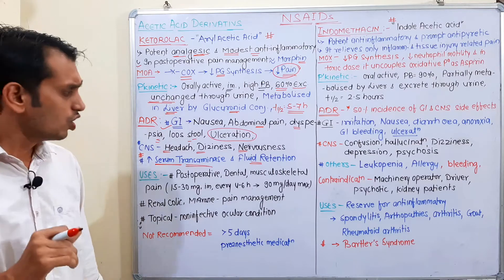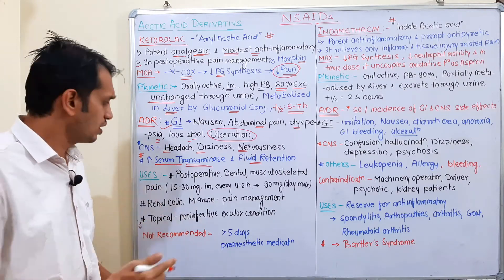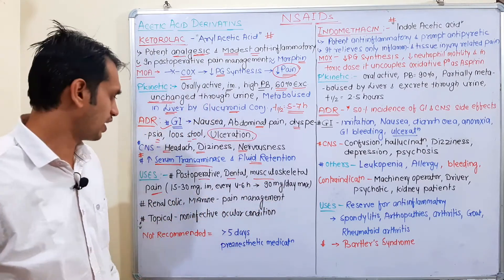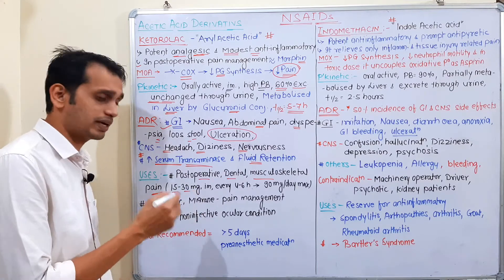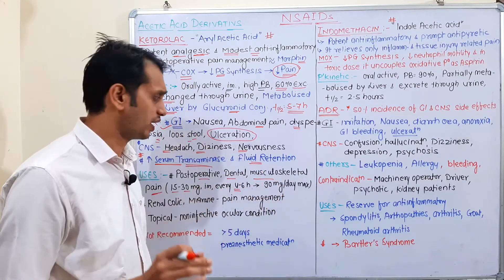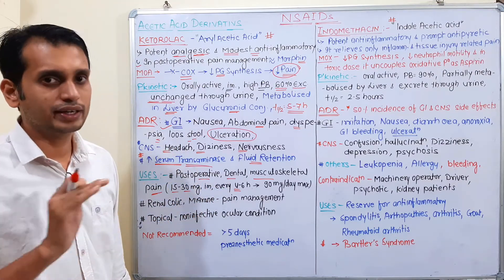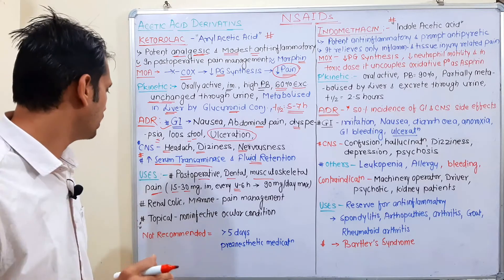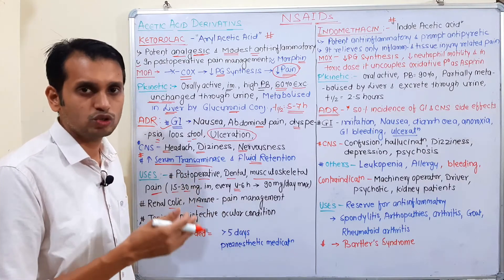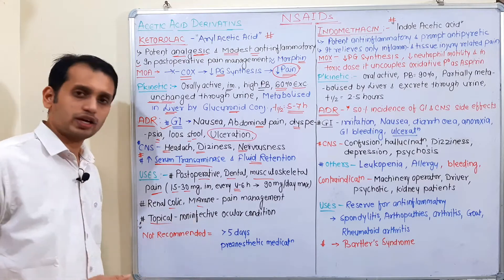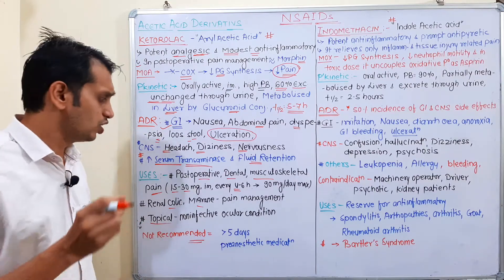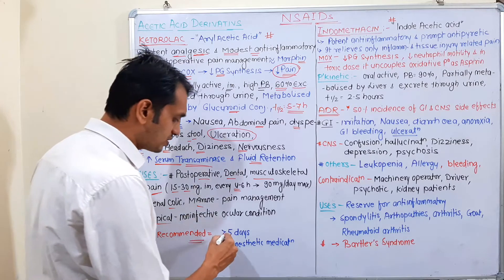The uses of ketorolac include post-operative pain, dental pain, and musculoskeletal pain — it is used in the analgesic group. The typical dose is 15–30 mg by IM route every 4 to 6 hours, with a maximum dose of approximately 90 mg per day. It is also used as an antipyretic, in renal colic, and in migraine pain management. It can also be used topically in ocular conditions. Importantly, it is not recommended for use for more than five days.